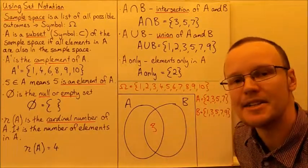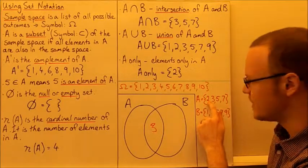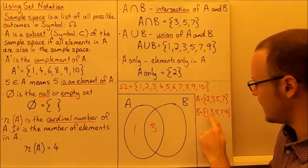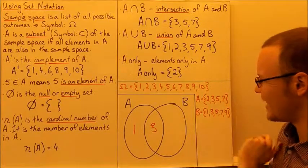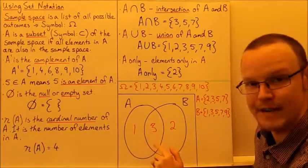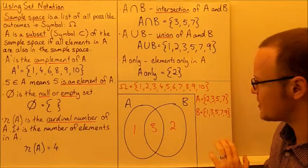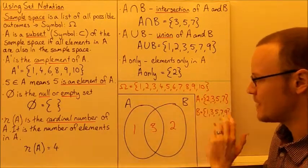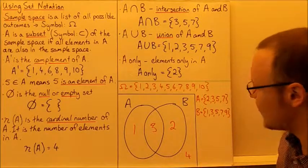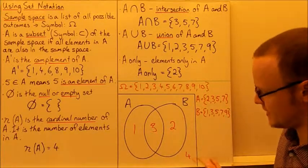There is 1 element — which is 2 — that is in A but not in B. B has 1 and 9 that aren't in A, so B has 2 elements in B but not in A, and they share 3. So A has 4 in total, and B has 5 in total. Because there are 10 numbers, there must be 4 numbers that aren't in either A or B — those are 4, 6, 8, and 10, which are all outside.